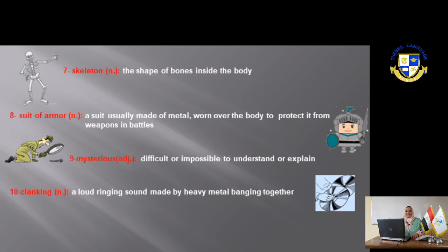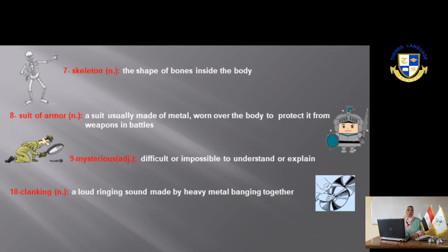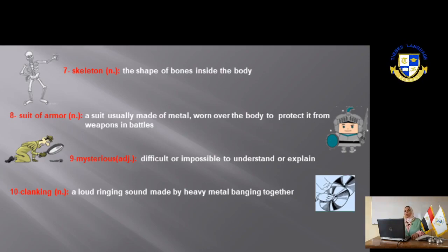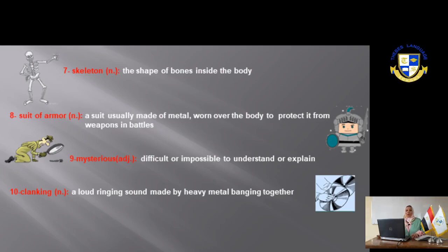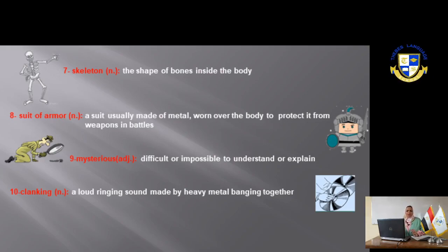The word 'suit of armor' is a suit usually worn by soldiers long ago to keep them safe from weapons — made of metal, worn over the body to protect it in battle or war. The word 'mysterious' is an adjective meaning difficult or impossible to understand or explain. The word 'clanking' is the loud ringing sound made by heavy metal banging together — when you hit two metal things together, it makes a clanking sound.